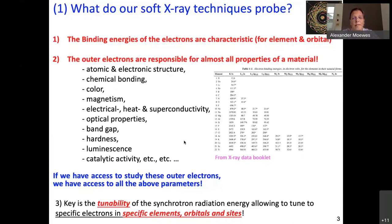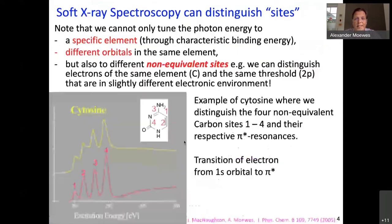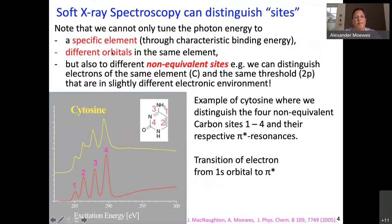The key for all of this is the tunability of the synchrotron radiation, which allows us with the energy to tune into specific electrons, specific elements, specific orbitals, and even specific sites. We can tune to a specific element because of the characteristic binding energy, we can tune to orbitals, and we can also tune to different non-equivalent sites.